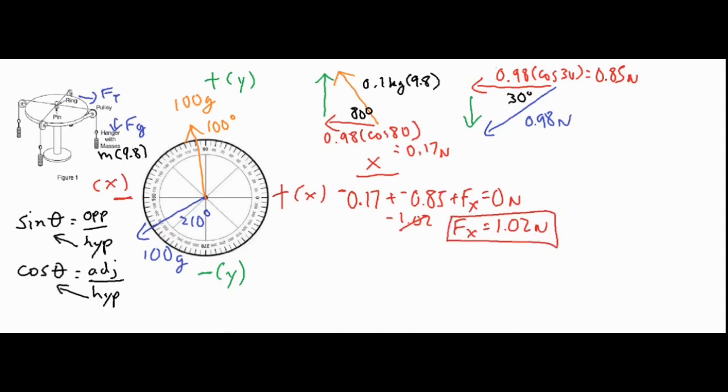We're halfway there for solving for the force components. Now let's take a look at the y components. For the y components, we have 0.98 times the sine of 80 degrees, which gives us 0.97 newtons. And then for the other side in green, we have 0.98 newtons times the sine of 30, and that gives us 0.49.